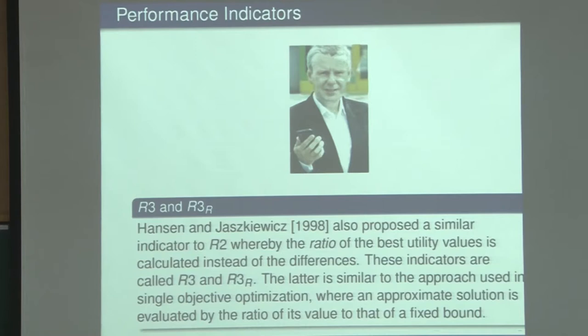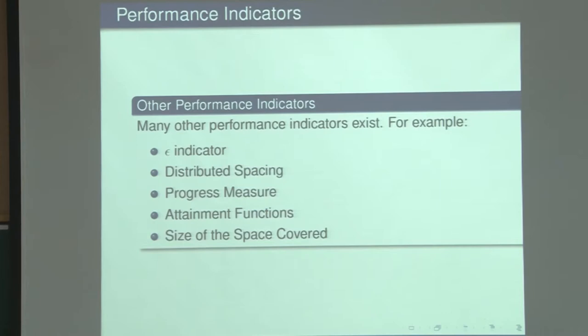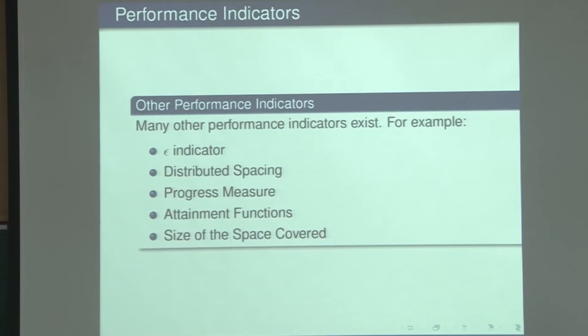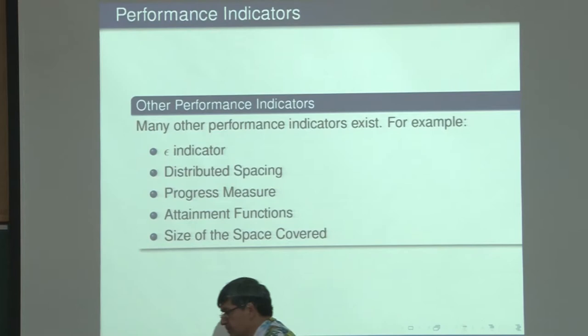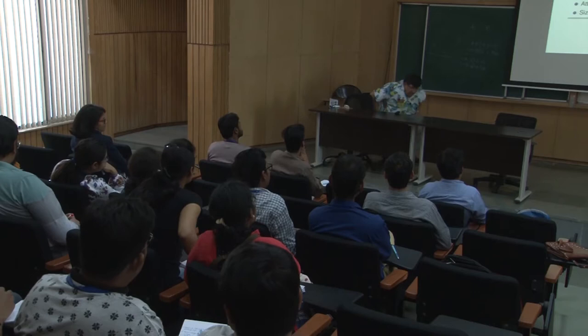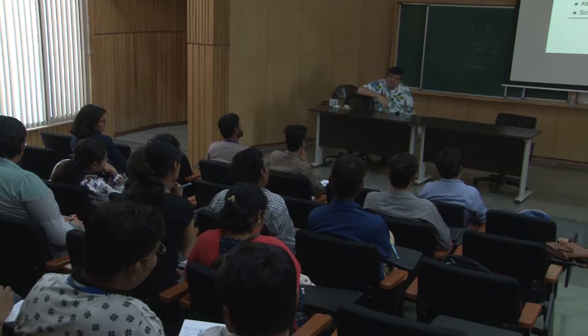R3 is not very common — it calculates the ratio of the best utility values instead of differences. R3R uses a reference. It's similar to an indicator used for single-objective optimization where an approximate solution is evaluated by the ratio of its value to a fixed bound. R1 and R3 are normally not used; R2 has been used a lot. There are many other indicators: epsilon, distributed spacing, progress measure, attainment functions, size of the space covered.